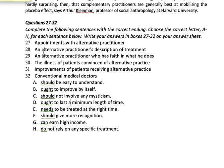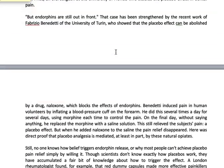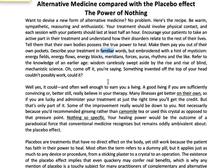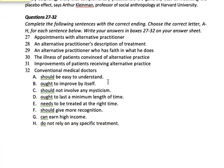The second question is 'an alternative practitioner's description of treatment.' Going back to the passage, the word 'describe' appears. The passage says: 'describe your treatment in familiar words' — familiar means words that are easy for anyone to understand. So now you know there is an option about being easy to understand. An alternative practitioner's description of treatment should be easy to understand. The answer to question 28 is A.